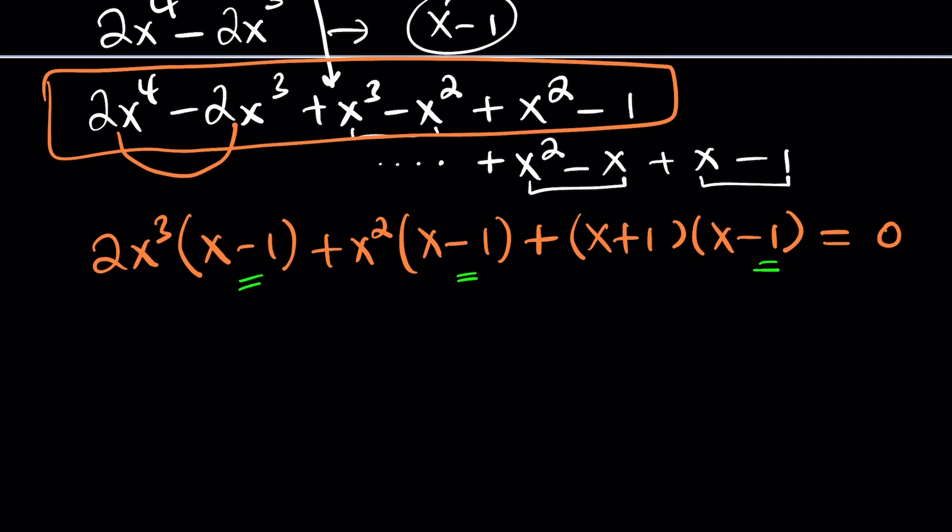Factor out x minus 1. And obviously, we already know that x equals 1 is a solution from the sum of the coefficients, but this is going to allow us to find the other factor, which will hopefully result in finding the other solutions. Which may not be very easy, by the way, I've got to tell you. And I'm going to show you a formula.